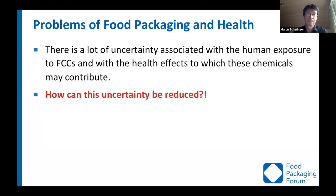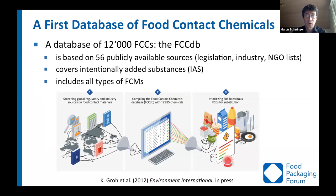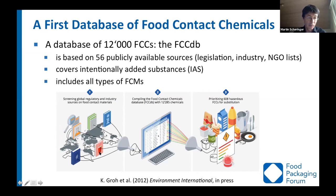To address this question, the FPF developed and finished this year a first database of food contact chemicals — the FCCDB — which contains the 12,000 substances already mentioned. It is based on 56 publicly available sources, such as lists of chemicals authorized for use in the synthesis of food contact materials, inventories compiled by industry, and lists compiled by NGOs. The work involved finding all these lists and inventories, extracting the substances, and identifying them in this database of more than 12,000 chemicals.